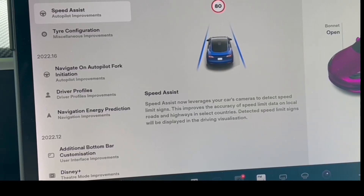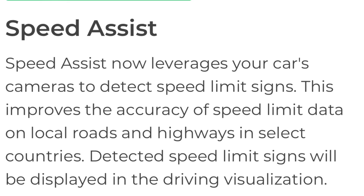So what we've got is Speed Assist. Speed Assist now leverages your car's cameras to detect speed limit signs. This improves the accuracy of speed limit data on local roads and highways in selected countries. Detected speed limit signs will be displayed in the driving visualisation. From what I read, they've now made the visualisation on the motorways better, and we're going to see if the cameras detect signs on the gantries on the motorway.